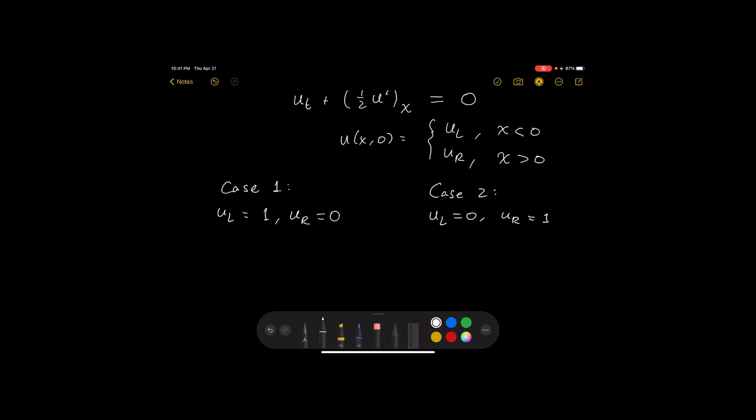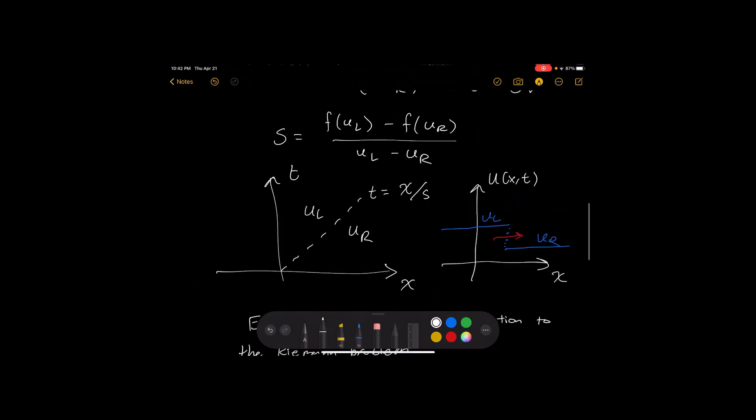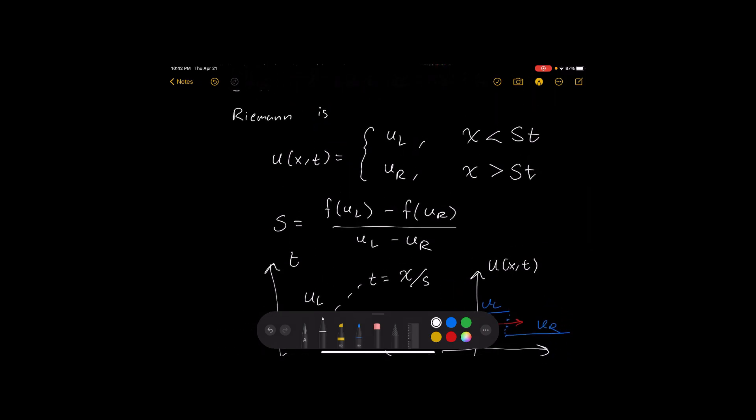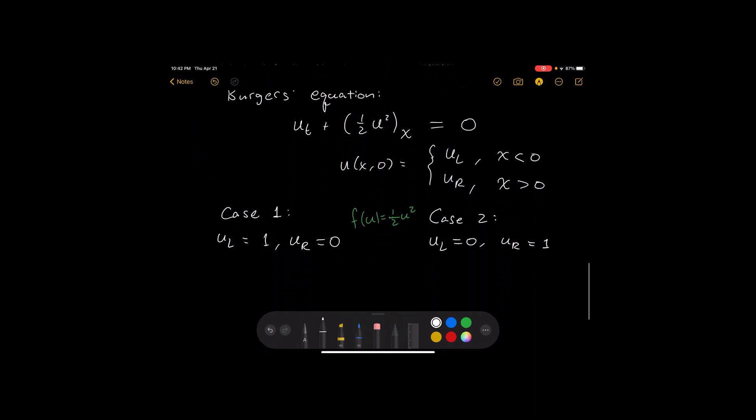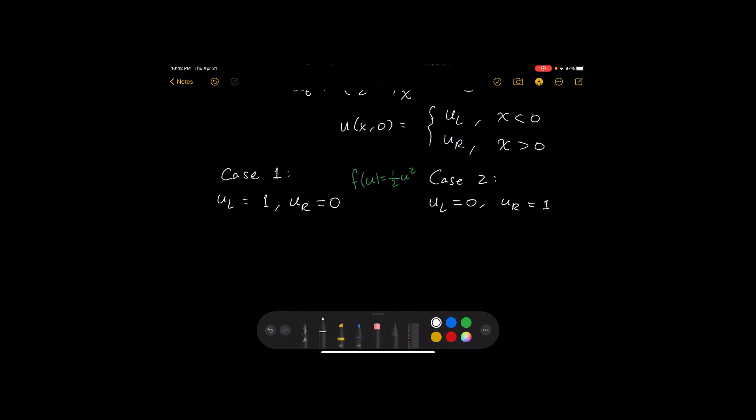Okay, if we know this, we know our flux is f(u) equals one half u squared. And so if you remember we want to compute that s, we said that this was a solution so we need to know what this s value is. So what is it? Let's see, s is one half u_left squared minus one half u_right squared over u_left minus u_right. You just plug in the numbers and you're going to see that this is one half.